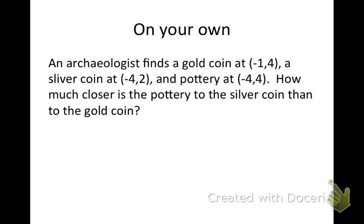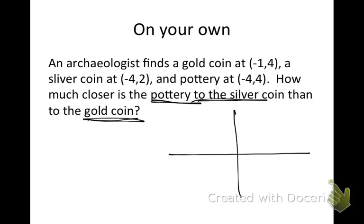Now you're going to do one of these on your own. Copy this down and make your coordinate plane in your notebook. An archaeologist finds a gold coin at one spot, a silver coin at another spot, and pottery at a different spot. Find the distance between some of these to answer the question: how much closer is the pottery to the silver than to the gold? Answer that in your notebook and put your answer in the text box on the right. If you need another example, look at page 277.